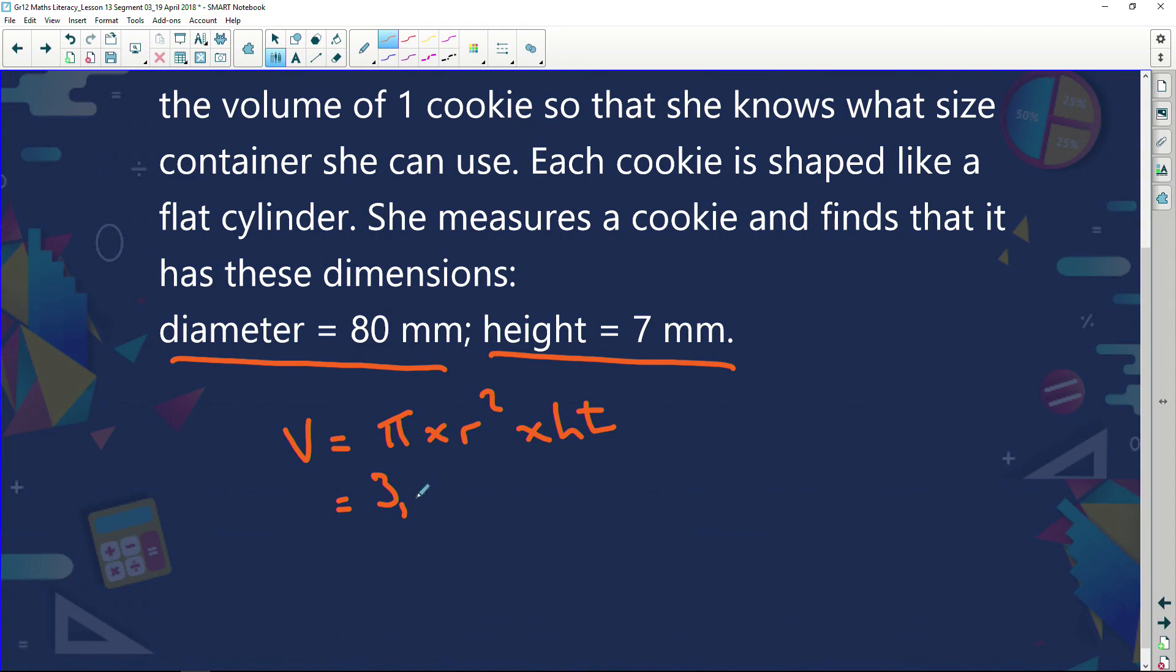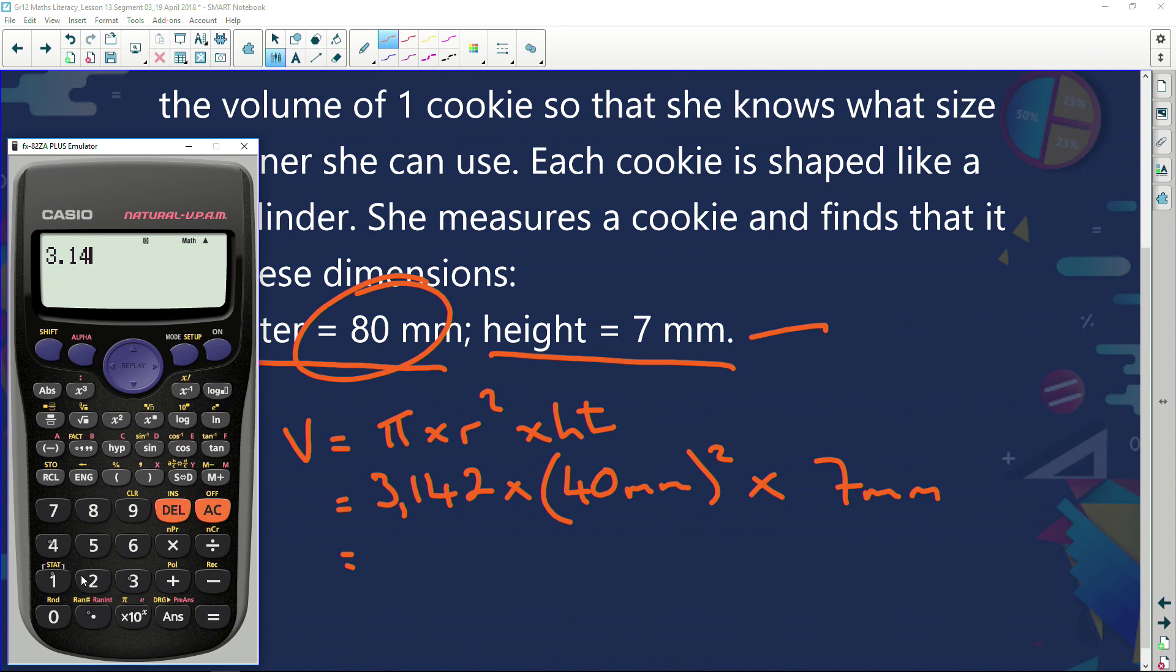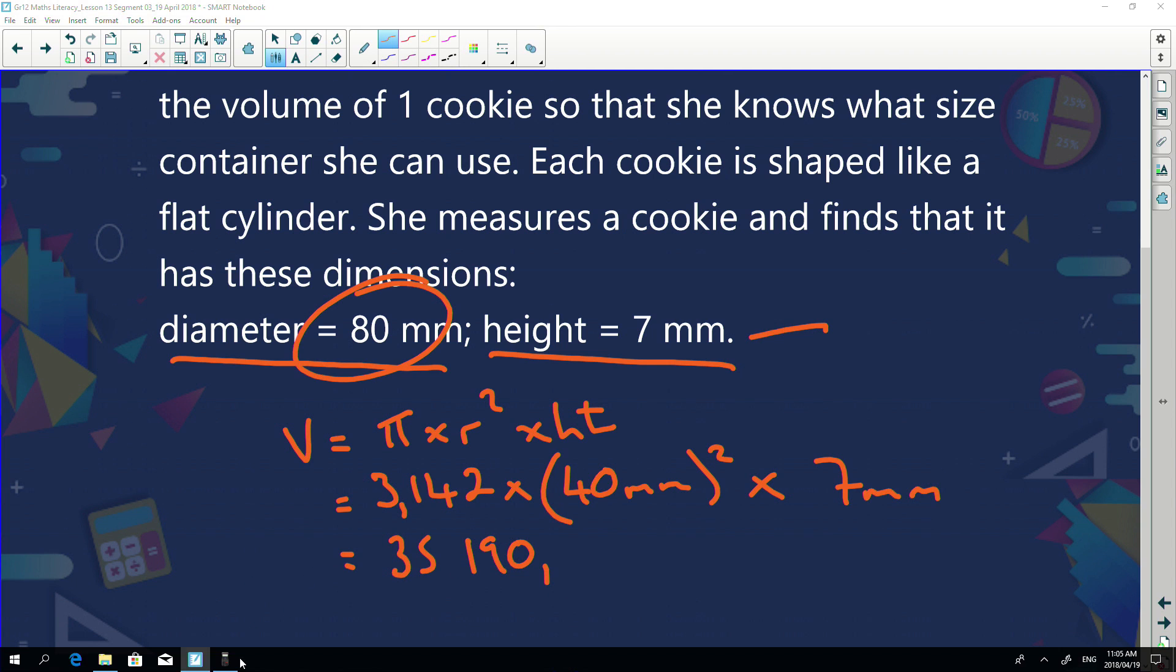Pi, we will be told, is 3.142. My radius - the diameter is 80. Radius is always half the diameter. So my radius must be 40. So I'm going to multiply that by 40 millimeters squared. Then I'm going to multiply it by the height, which is 7 millimeters. Let's go ahead and put all this into our calculator. 3.142, multiply that by 40 squared, multiply that by 7. And I'm going to get an answer here of 35,190.4.